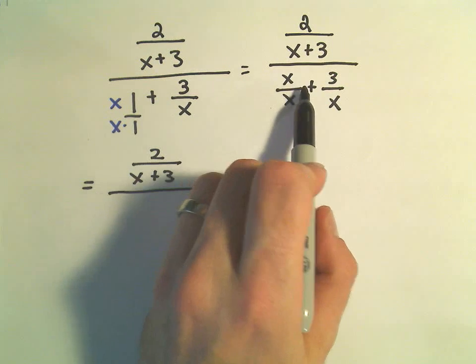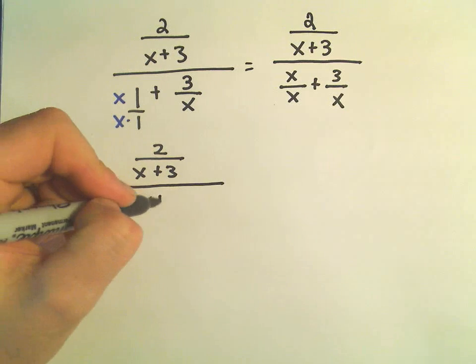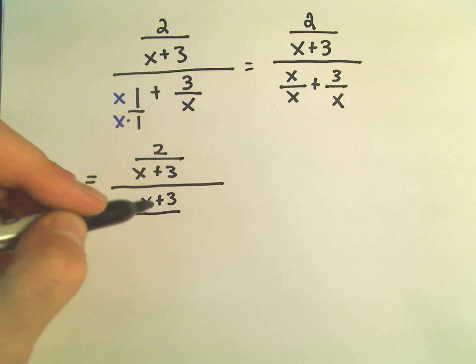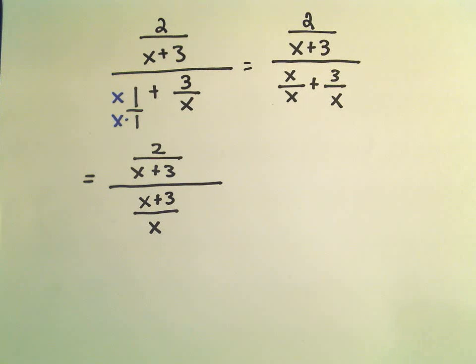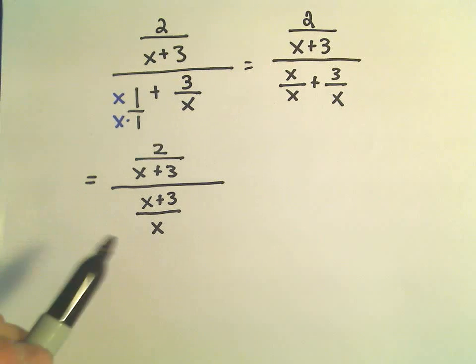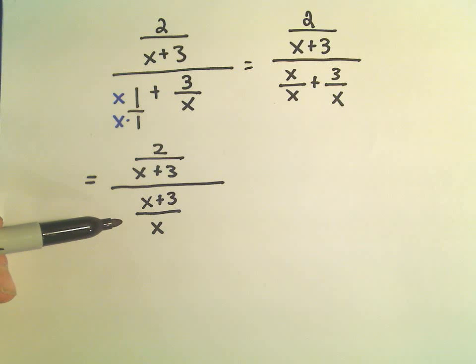So in the numerator of the denominator, we would have x plus 3, which we can't really do much with, divided by our common denominator of x. So this is kind of the first half of it. Getting the numerator as a single fraction, and now the denominator as a single fraction.